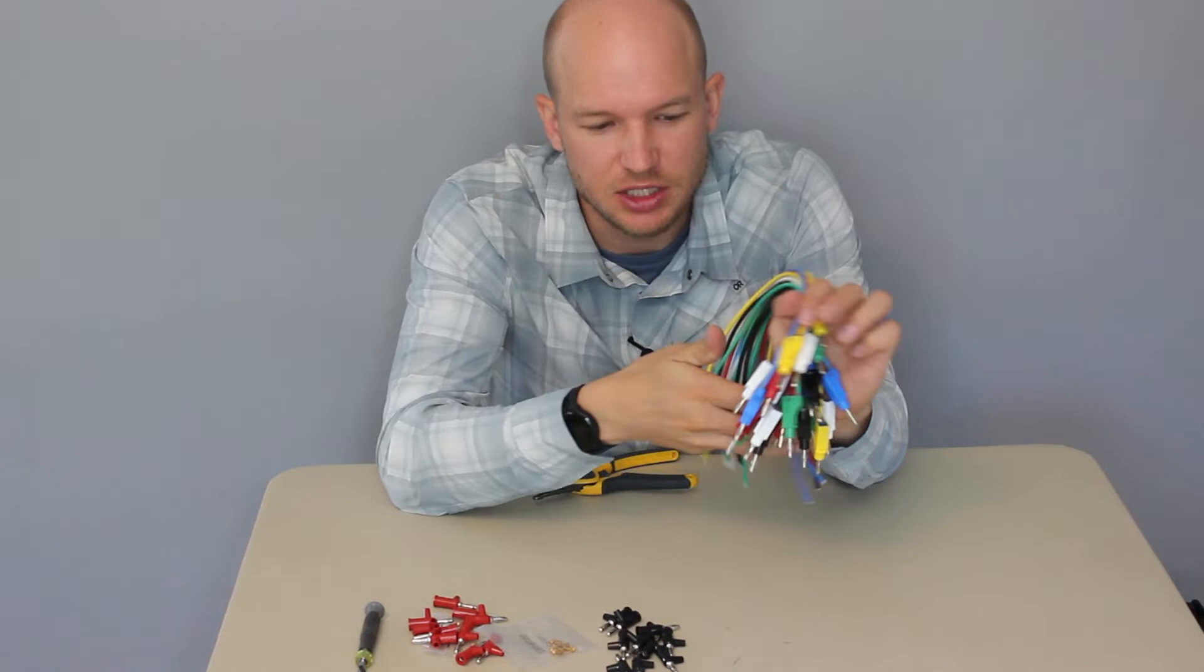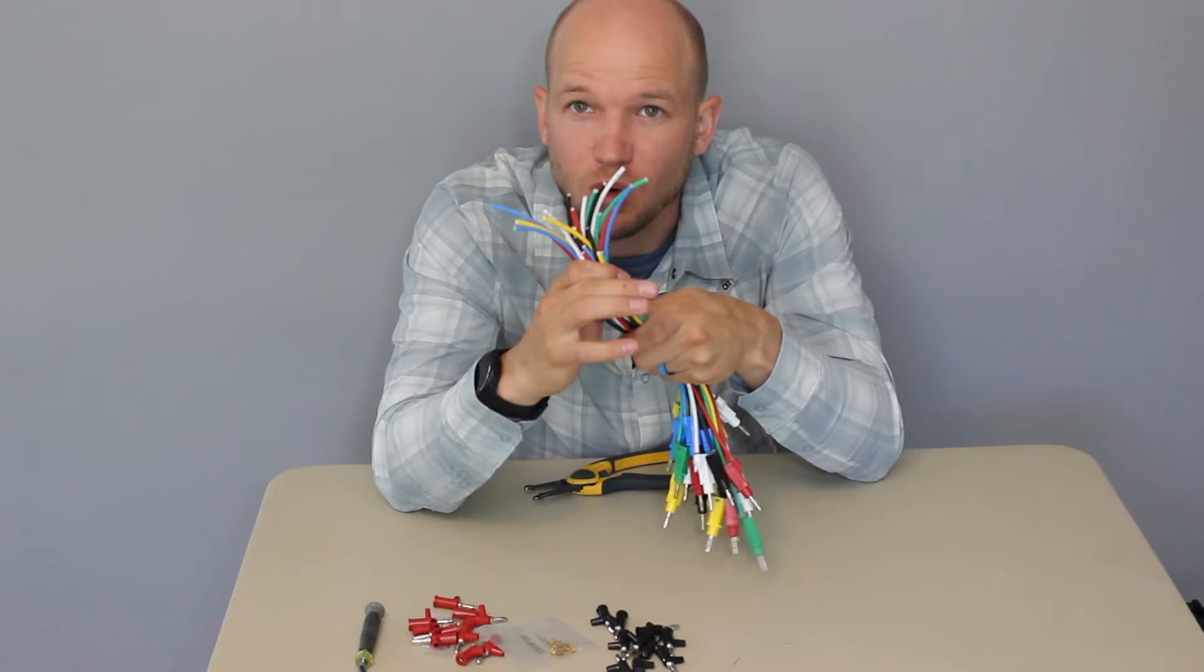So we've cut all of our leads down to 12 inches. So we have a banana plug on one side, and then the other side is just a cut wire at this point. We're now going to put the PT201 back on the table and pull the connectors off of the controller to get those wired up.